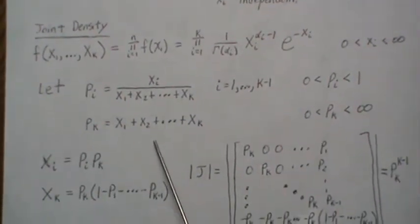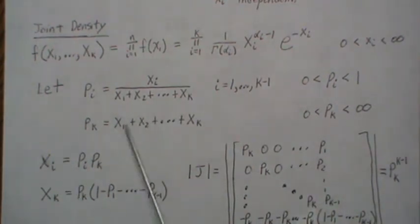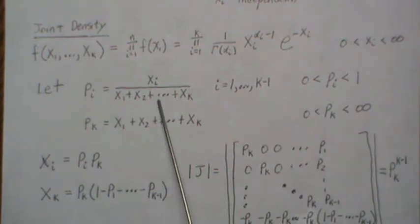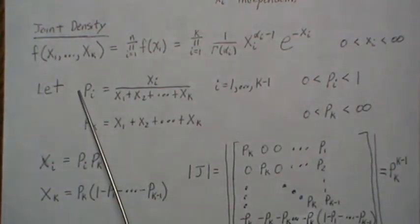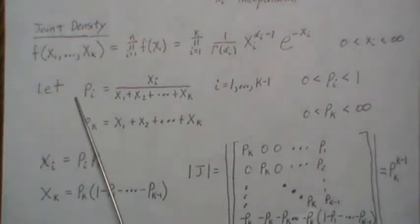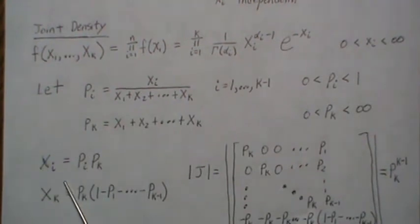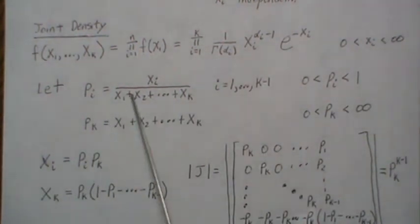Now to do the multivariate transformation you have to back solve for the X's. If you multiply this over here, this is PK, so you get PK times PI equals Xi which is what this term is, and after some manipulation you can get that XK is this.